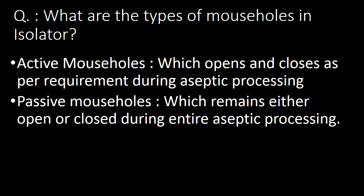Next important question: what are the types of mouse holes in an isolator? There are two types: active mouse holes and passive mouse holes. Active mouse holes open and close as per requirement during aseptic processing. Passive mouse holes remain either open or closed during the entire aseptic processing.